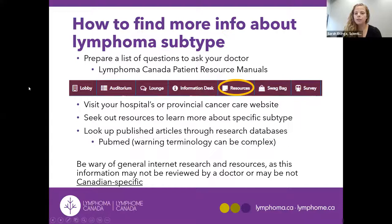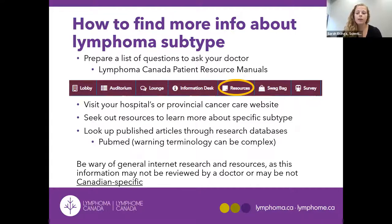You can also get information on your subtype through a hospital or cancer care website, or by doing an internet search on your specific subtype. Research databases such as PubMed will have published articles on your subtype, but be careful — the terminology can be complex and scientific. If you get overwhelmed or frustrated, look for plain, simple text, usually patient guidelines that are Canadian-specific. You also have to be cautious about where you get your information from, as not all resources are reviewed by doctors or specific to Canadians — Health Canada has different regulations from the U.S. and other parts of the world on how they approve cancer drugs and therapies for lymphoma patients.